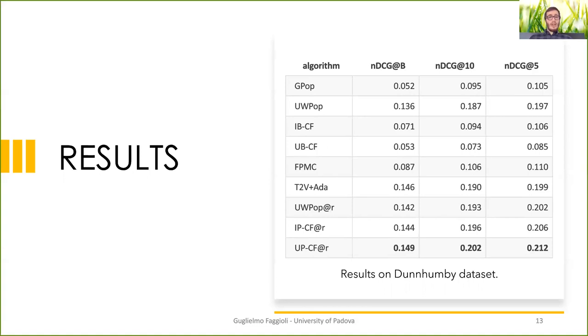These are the results on the Dunhamby, which are very similar. Here also you can observe, as in the previous dataset, that the user-wise popularity itself is a very strong method and a very strong baseline that achieves very good results. But the user-based method, again, is able to overcome all the other methods.